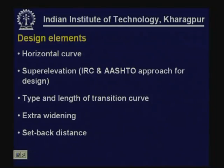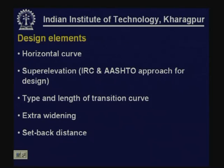On horizontal curves, sight distance is a major consideration. The inner side of the curve should be free from all sorts of encroachment. There should be no obstruction that may cause difficulty in terms of available sight distance. The setback distance defines how far inside the horizontal curve it should be free from obstruction. Altogether, horizontal curves, super elevation, transition curve, extra widening, and setback distance are the five major design elements of horizontal alignment.